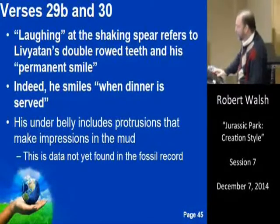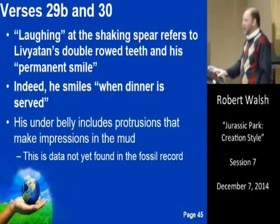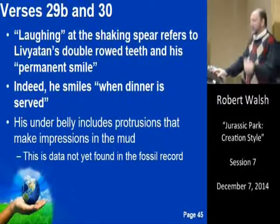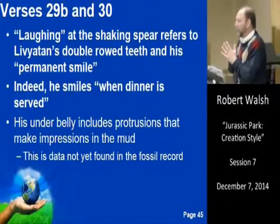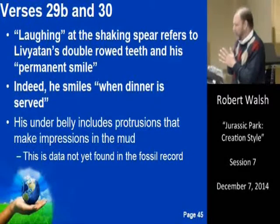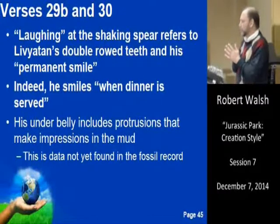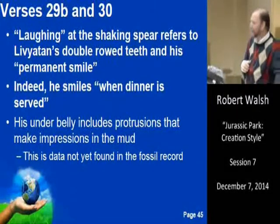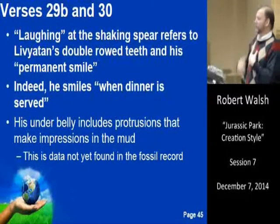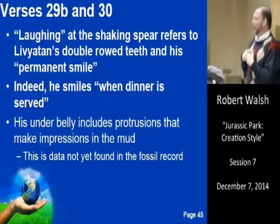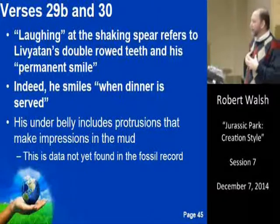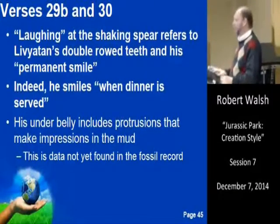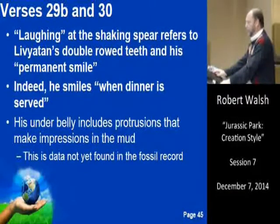Laughing at the shaking spear refers to Leviathan's double-rowed teeth and his permanent smile — he smiles when he sees dinner being served. Another interesting detail: under his belly are protrusions that make impressions in the mud when he hunkers down, leaving a pattern in the soil. We don't have any reference to this structure in the fossil record — it was probably some kind of cartilage material. This is information given in the biblical text that is not given in the fossil record.